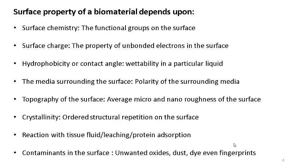Surface characterization is very important since most biological phenomena are surface-reactive. The surface properties of a biomaterial depend upon surface chemistry and the functional groups present on the surface. It could be the surface charge, hydrophobicity or hydrophilicity, or how the material reacts with the surrounding media. The topography of the surface — the micro and nano roughness — is also important because biological cells and cellular appendages like pseudopodia interact with the topography of the surface.